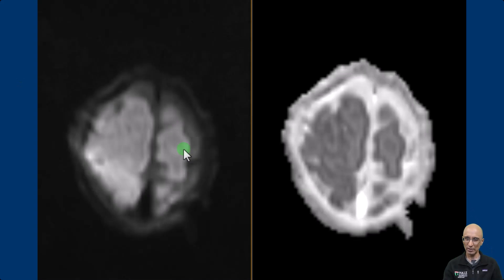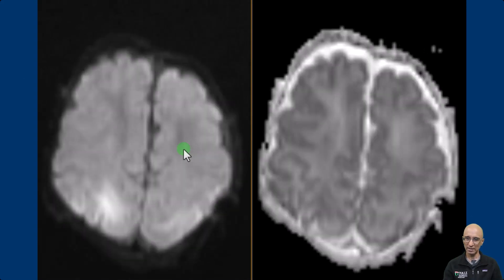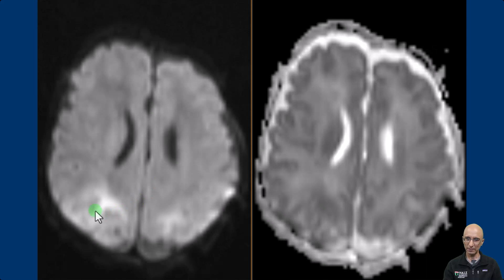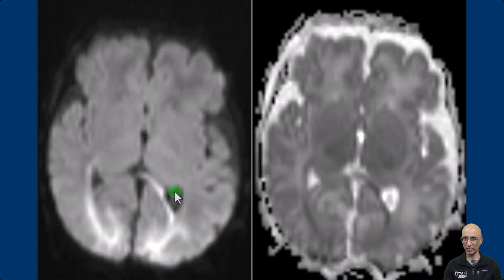I'm going to scroll through the DWI and ADC images. As you can see, the patient has restricted diffusion involving the bilateral parietal occipital regions, cortex, and subcortical regions. You can also see restricted diffusion involving the splenium of the corpus callosum, almost having a configuration known as the boomerang sign.